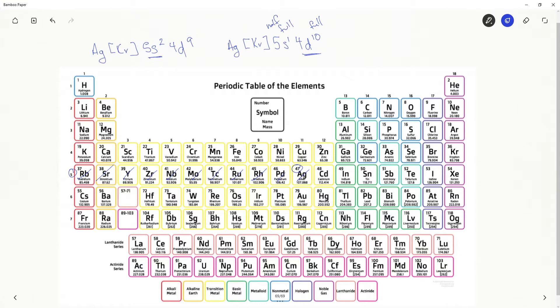Again, silver is looking for an arrangement of electrons that gives it the lowest possible energy state. And it is better to have a full orbital and a half-full orbital than to have this 4d9 here, which is just almost full, but not quite.